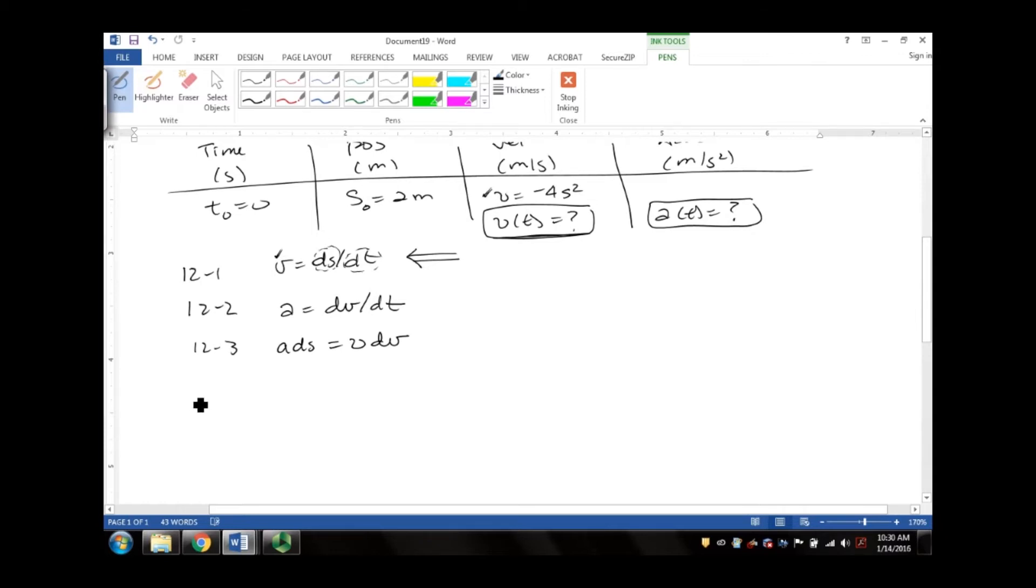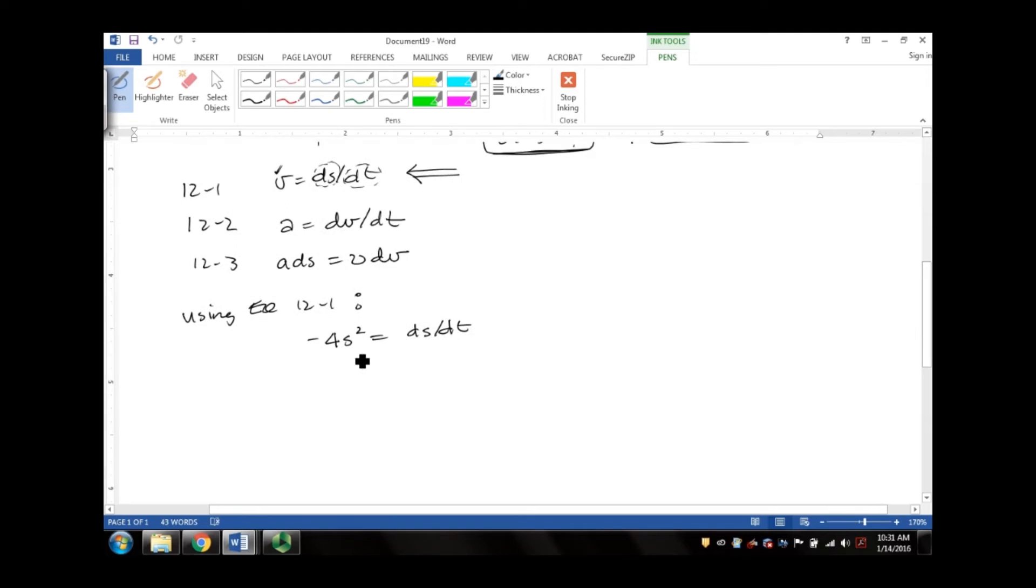So let's see what we get if we substitute negative 4s squared into equation 12.1. Using equation 12.1, we get that negative 4s squared equals ds/dt. I'll now need to take this variable and switch it over to the right side. So I get negative 4dt equals s⁻² ds. I can integrate this.